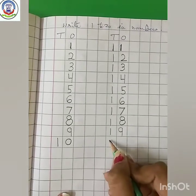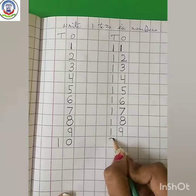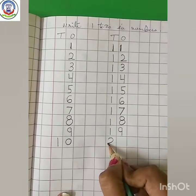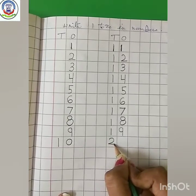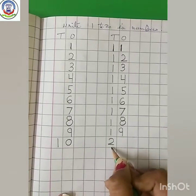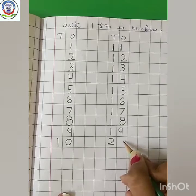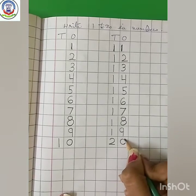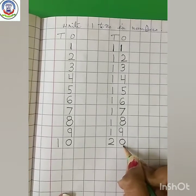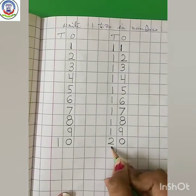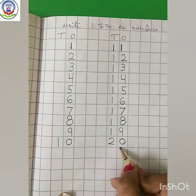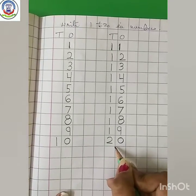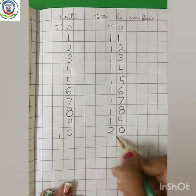Now, next number. Make a curve and sleeping line — 2. Make a circle — 0. 10 plus 10 is 20.